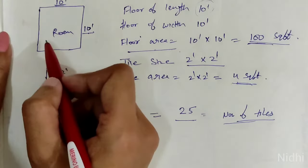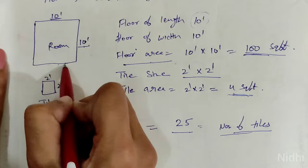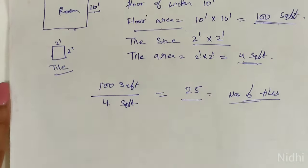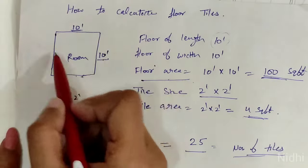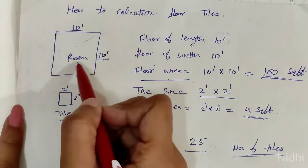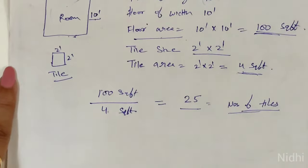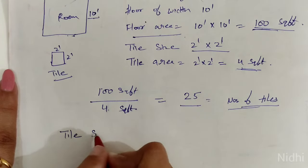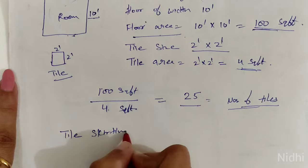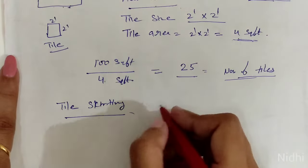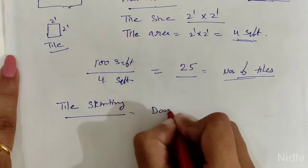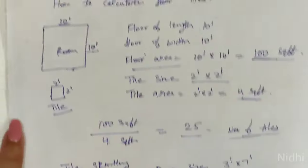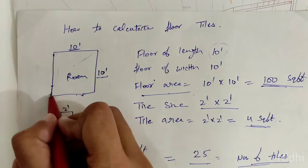Next is skirting. Now we have the number of tiles, so what will we do for the skirting? First, the door size is 3 feet by 7 feet. For example, the door is here.